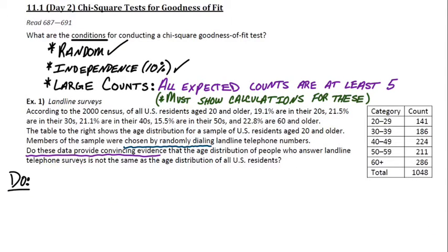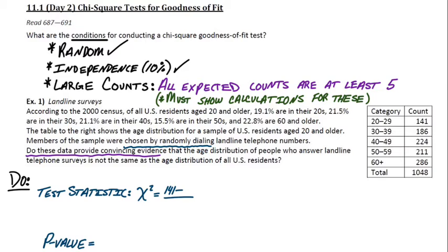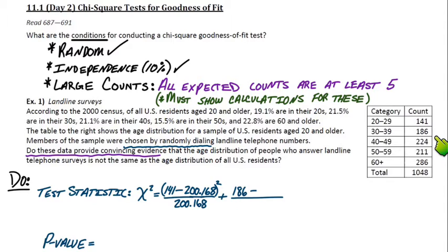For the do step, we need to show the test statistic and the p-value. The test statistic isn't a z-score or a t-score — it comes from the chi-square distribution. For our chi-square test statistic, we start with the first observed count of 141, subtract the expected count of 200.168, square the difference, and divide by the expected. The next category: 186 minus the expected of 225.3, squared, divided by the expected. We demonstrate the pattern for the first couple of terms.